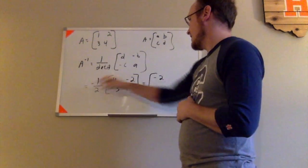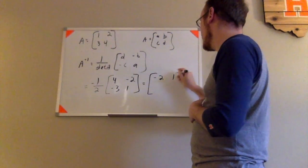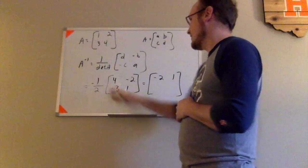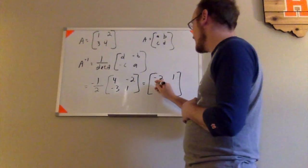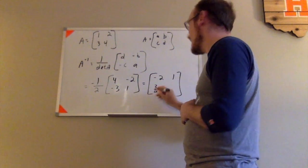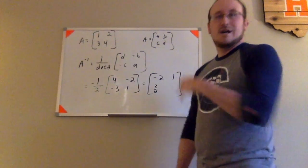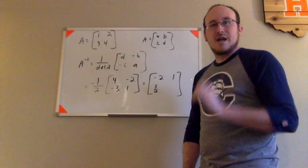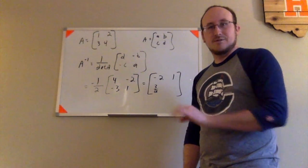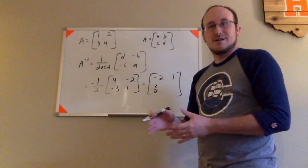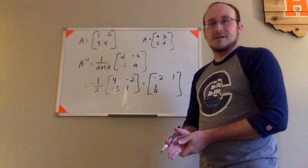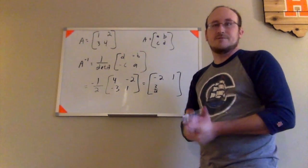Now going ahead and doing the scalar multiplication to get the actual inverse of this matrix. Negative 1 half times 4 is negative 2. Negative 1 half times negative 2 is positive 1. Negative 1 half times negative 3 is a positive 3 halves or 1.5. You could use the decimal there because it's exact.